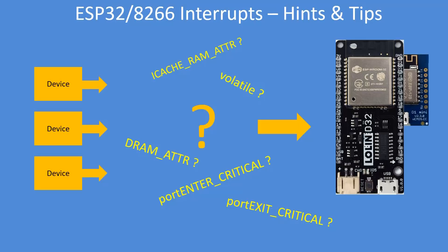So you probably will have seen some of these words here: iCache, RAM attribute, volatile, dynamic RAM attribute, port enter critical, port exit critical. I'll go through some of those.